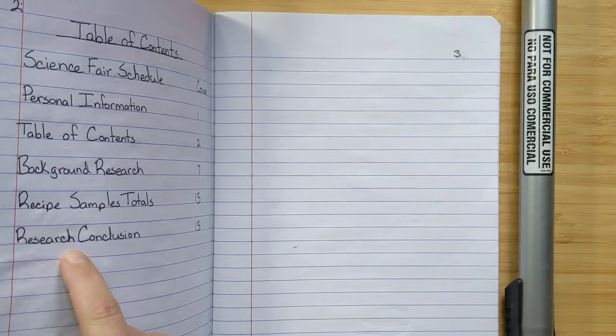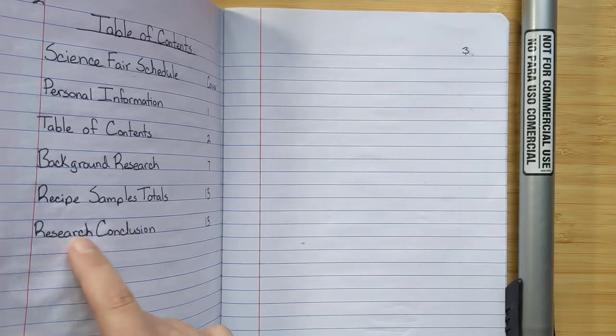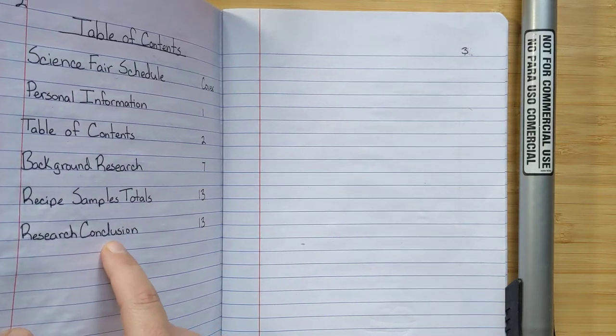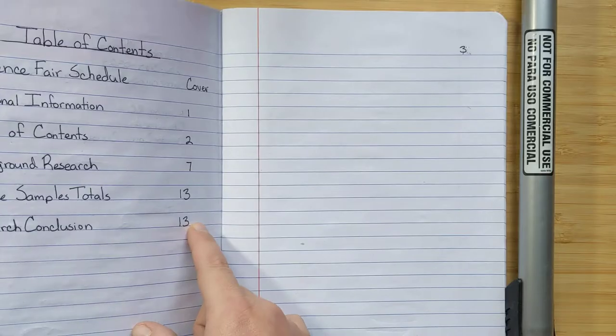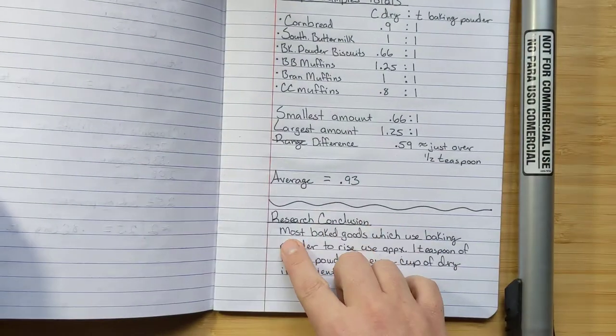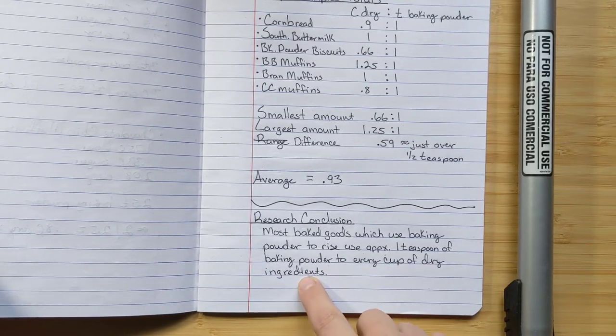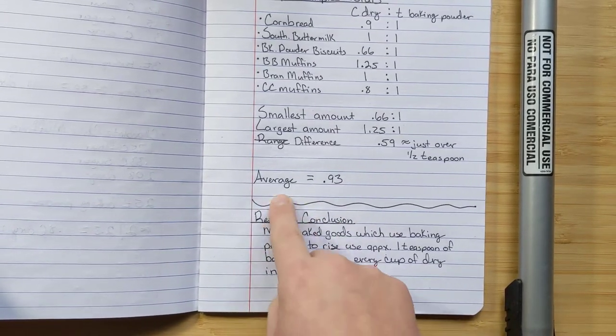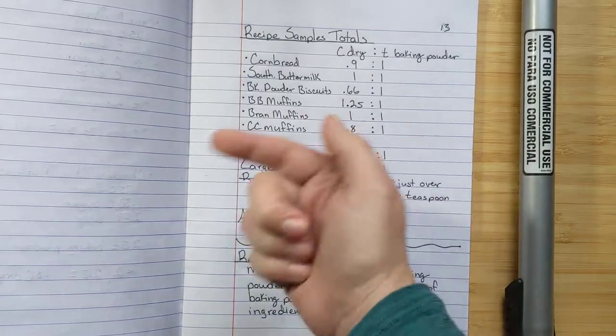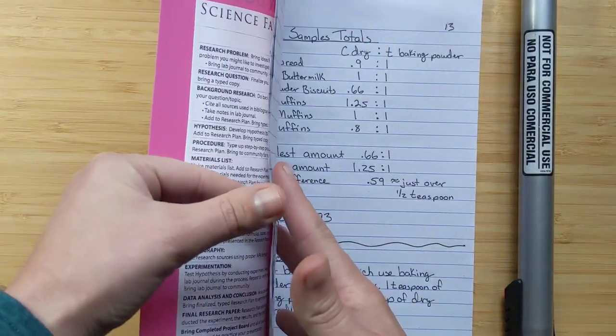And then I also, I'll show you in a second, I wrote a research conclusion. I don't know if that was a great title for that, but hey, there it is. Research conclusion. I'm not a full-on scientist and I don't have exact knowledge about how to write these things up, but I wrote it in so they could find, I drew some conclusions from my research on page 13. So my research conclusion is most baked goods which use baking powder to rise use approximately one teaspoon of baking powder to every cup of dry ingredients. So this information is going to give me a place to start for my own personal experiment. So all of this that I just did, all of this chart and these recipes, this was all part of my background research, which started on whatever page I said it started on.